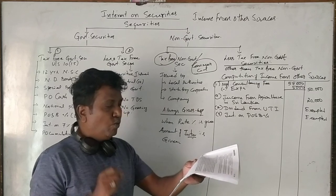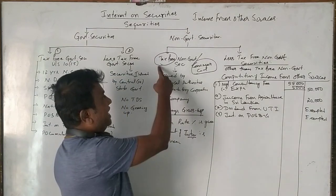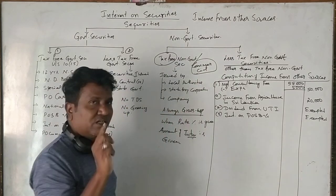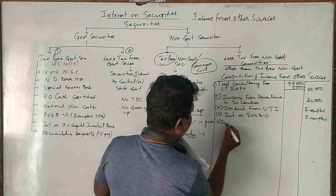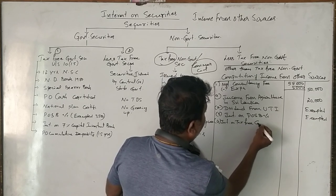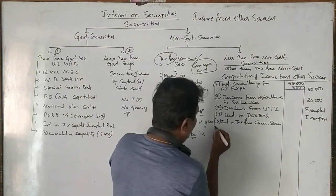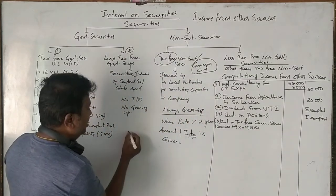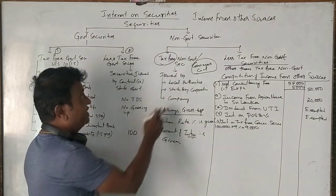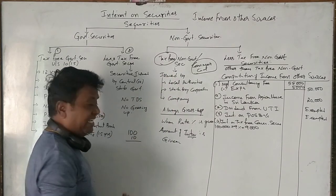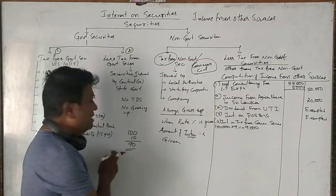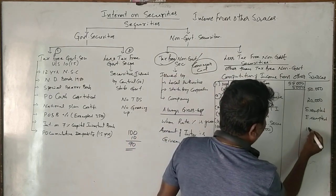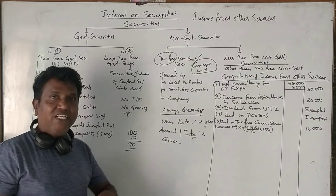She holds 100 units of 9% tax-free commercial securities. For tax-free commercial securities we always have to gross up. Interest on tax-free commercial securities on one lakh at 9% is 9,000 rupees. Usually, if you earn interest from tax-free non-government securities, 10% tax is deducted and 90% is paid net. So 9,000 rupees represents 90%, and 100% would be 10,000 rupees, which is the taxable gross amount.